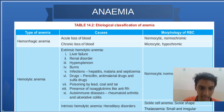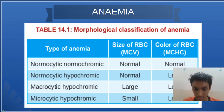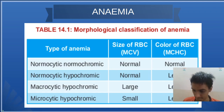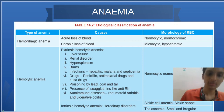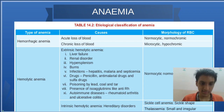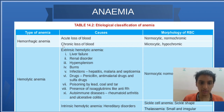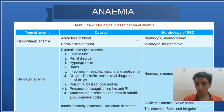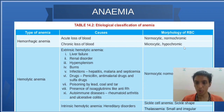Starting with hemorrhagic anemia: there is acute loss of blood and chronic loss of blood. In acute loss, the morphology will be normocytic normochromic. In chronic loss, it will be microcytic and hypochromic.